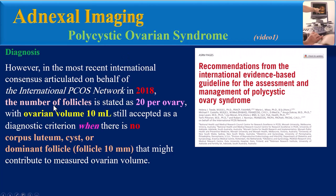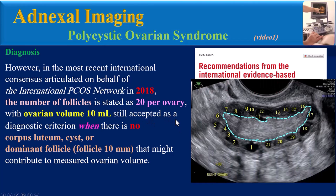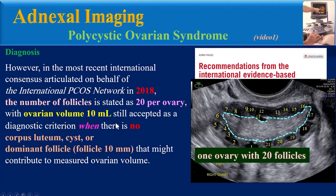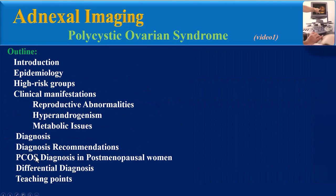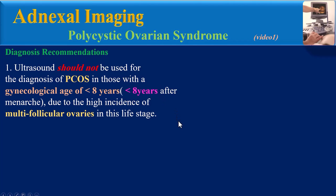In the most recent international consensus from the International PCOS Network in 2018, the follicle threshold is stated as 20 or more per ovary, with ovarian volume of 10 milliliters or more still accepted as a diagnostic criterion — but only when there is no corpus luteum, cyst, or dominant follicle that might contribute to measured ovarian volume. Therefore, one ovary with at least 20 small follicles, or one ovary with a volume of 10 milliliters or more, meets PCO morphology criteria.